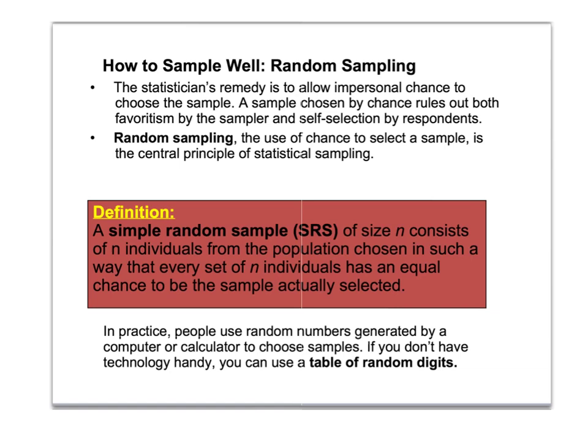A simple random sample means that every person in the population has an equal chance of being selected in your sample. It is by far the best type of sampling — not always doable, but it is the ideal for any kind of experiment or observation. We can use calculators or computers, however those aren't truly random, so sometimes you're encouraged to use a table of random digits.